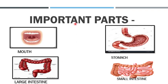Now, the important parts of our digestive system: first is the mouth, second is the stomach, then the small intestine, and then the large intestine.